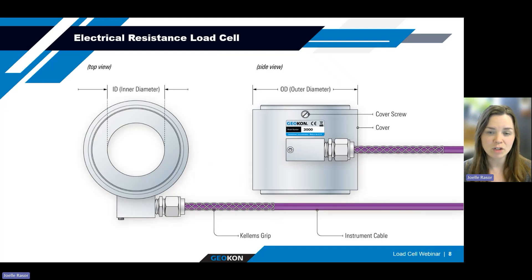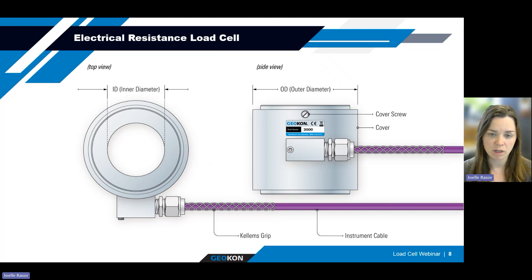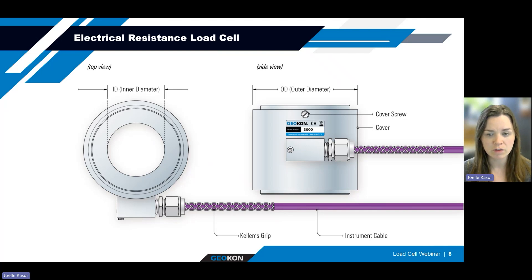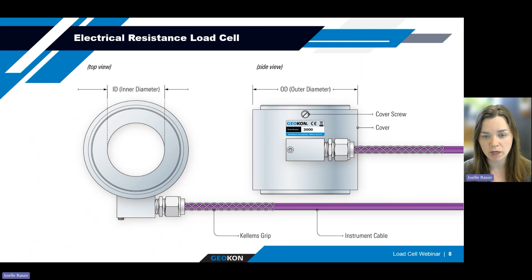The electrical resistance load cell is made from an annulus of high-strength steel or aluminum and is manufactured with 4 to 12 electrical resistance gauges in a Wheatstone bridge configuration, similar to the vibrating wire load cells. They can be manufactured with a solid body or hollow core to accommodate any equipment that needs to pass through the load cell. The electrical resistance strain gauges are etched onto the perimeter of the load cell body, and then a protective cover is permanently installed over the body. Readings from each strain gauge are averaged to compensate for eccentric loading. They are also designed according to the specifications of your project in terms of capacity, inner diameter, and outer diameter.